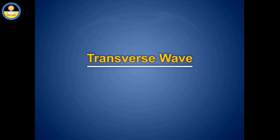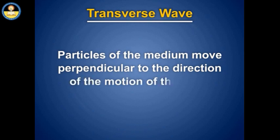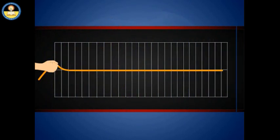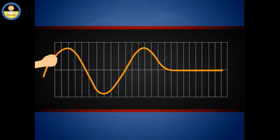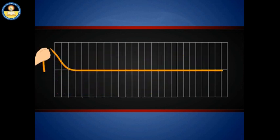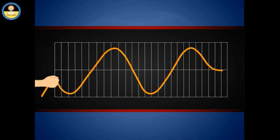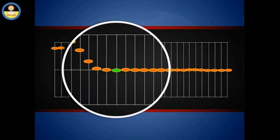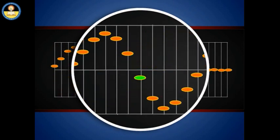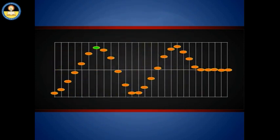A transverse wave is a wave in which particles of the medium move perpendicular to the direction of motion of the wave. Here, a string is tied to a fixed end. When a disturbance is imparted at the free end by vibrating it up and down, the disturbance or wave pulse propagates through the string from left to right, but the particles of the medium get displaced upwards and downwards — perpendicular to the direction that the wave pulse moves.